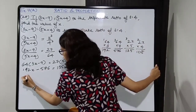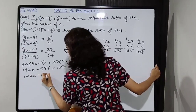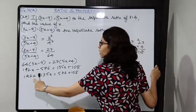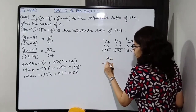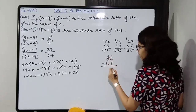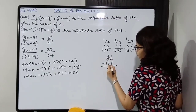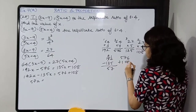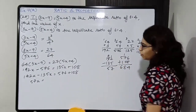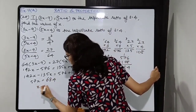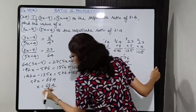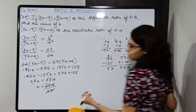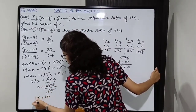Shifting x terms over here and numbers together: 57x is equal to 576 plus 108, which gives 684. Divided by 57: 57 times 12 is 684. So x is equal to 12.